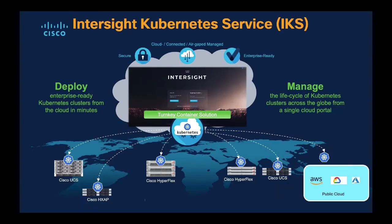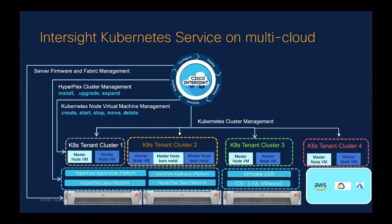Intersight Kubernetes Service allows customers to deploy and lifecycle manage production-grade clusters across the globe, on-prem or in public cloud. On-prem, customers have the option of choosing either VMware or avoiding a hypervisor and using Cisco's Hyperflex application platform. Customers can also deploy Kubernetes clusters on bare metal. Let's take a look at how Intersight can orchestrate the complete infrastructure stack — the Hyperflex stack — starting from Server Firmware Management to the Hyperconverged layer and then to the Kubernetes layer.